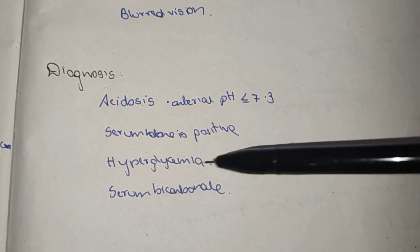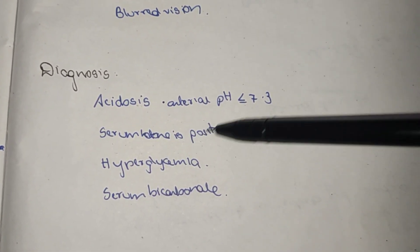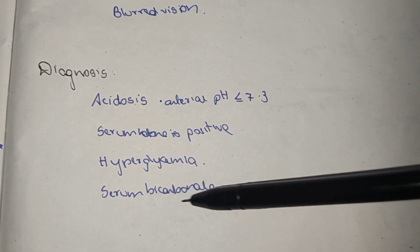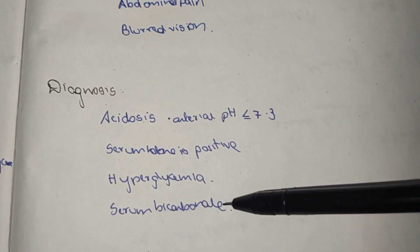Diagnosis of diabetic ketoacidosis: arterial pH less than 7.3, positive serum ketones, hyperglycemia, and reduced serum bicarbonate.